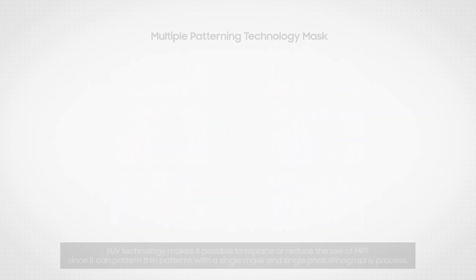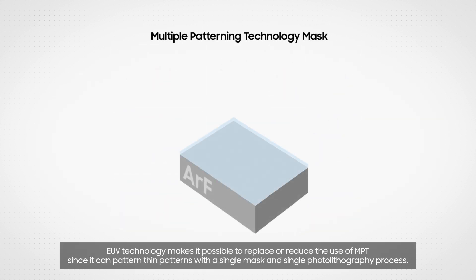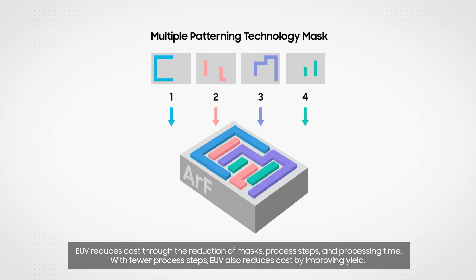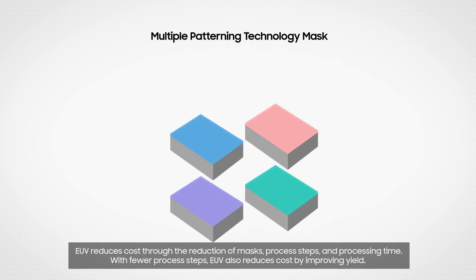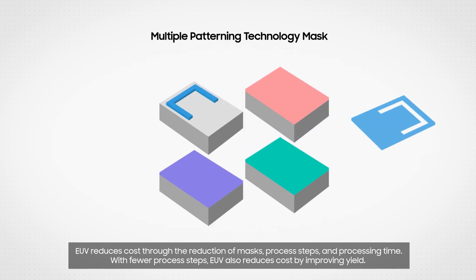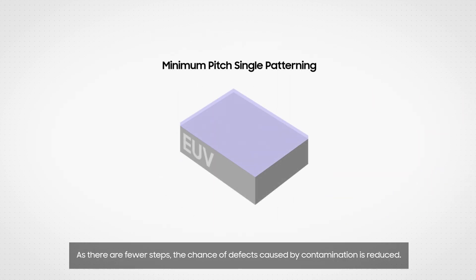EUV technology makes it possible to replace or reduce the use of MPT since it can pattern thin patterns with a single mask and single photolithography process. EUV reduces cost through the reduction of masks, process steps, and processing time. With fewer process steps, EUV also reduces cost by improving yield. As there are fewer steps, the chance of defects caused by contamination is reduced.